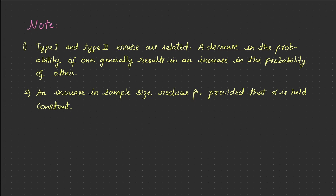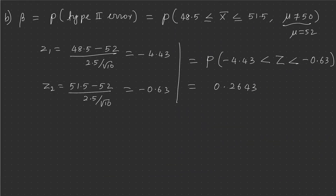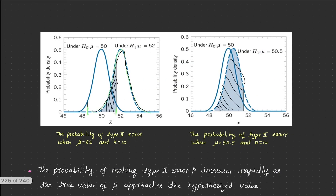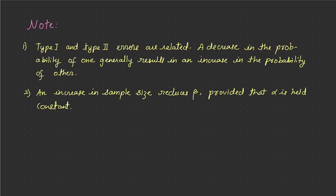There are a few important notes. Type 1 error and Type 2 error are related — if you decrease one, the other increases. An increase in sample size reduces beta provided that alpha is fixed. That is the reason in the next session we will fix the level of significance. Once the level of significance is fixed, we can decrease Type 2 error by increasing the sample size. In this course, we are not much interested in Type 2 error, since if the true sample mean is not exactly known it is impossible to find it.